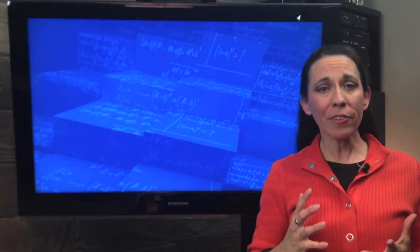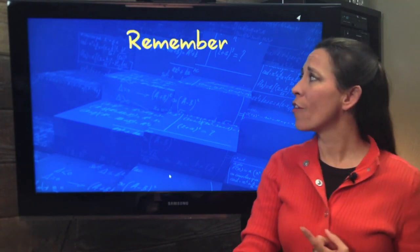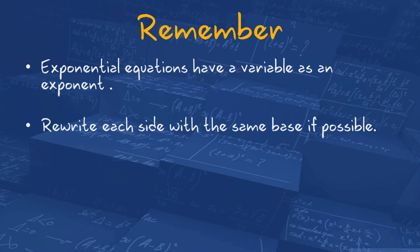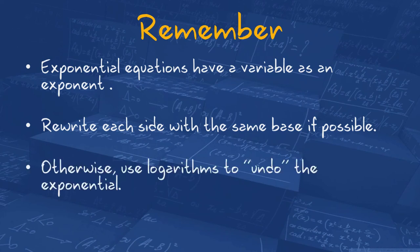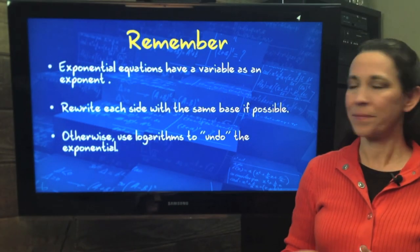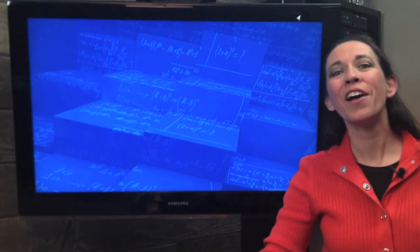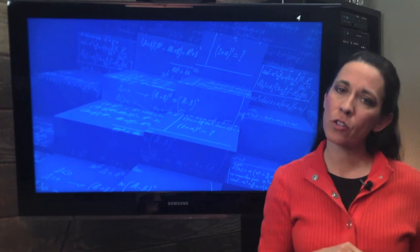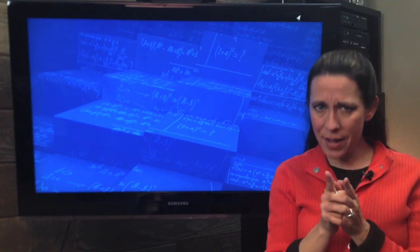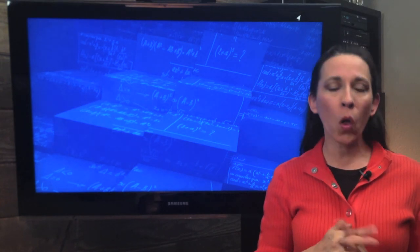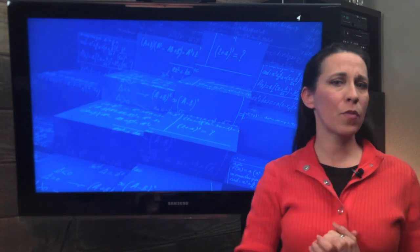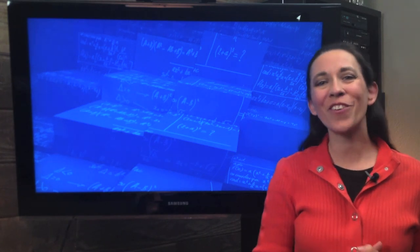So how did you do? A few things to remember: first, exponential equations have the variable as the exponent. If we can, we want to rewrite each side with the same base. Otherwise, we use logarithms to undo that exponential — they're inverses. Hopefully that helped. If you still have questions, feel free to watch the video again, look for other videos online, ask your teacher, tutor, or friends. Don't let your pride keep you from passing — there are always tons of questions on the logarithm section. Thanks again for watching.